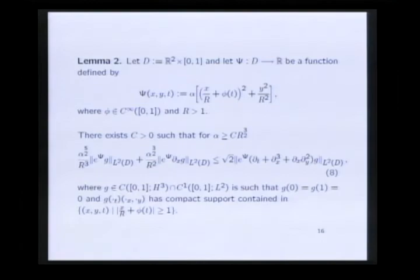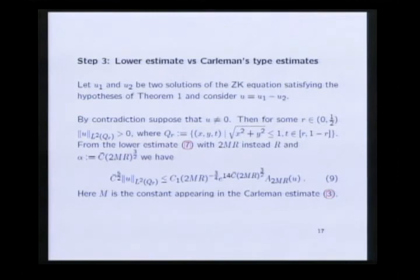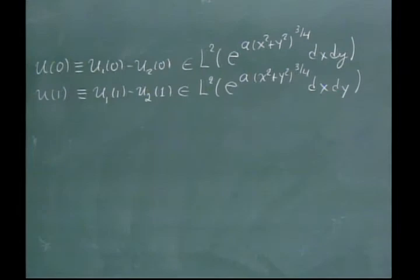This lemma expresses a continuity property of the inverse operator of the linear part of the ZK equation from L2 to L2 with this weight. In this weight, the exponent c is a function which depends on X, Y, T and a certain parameter alpha which we will use later. This estimate is valid for functions G with this smoothness and such that at the times T equals 0 and T equals 1 they are identically 0 and with support contained in this set.